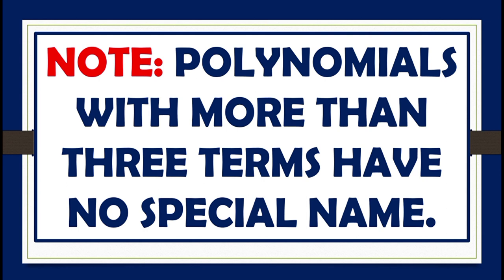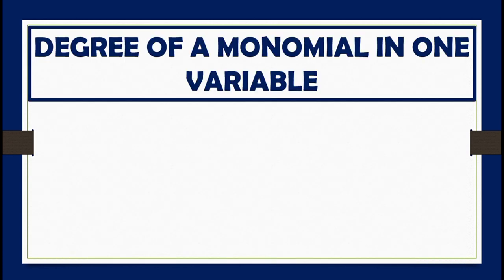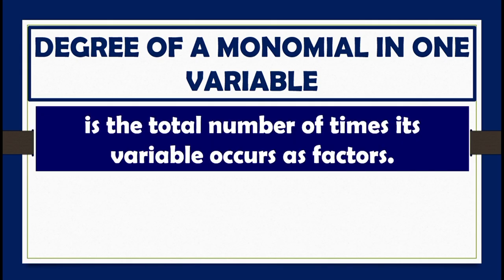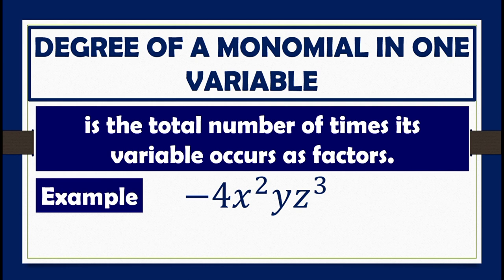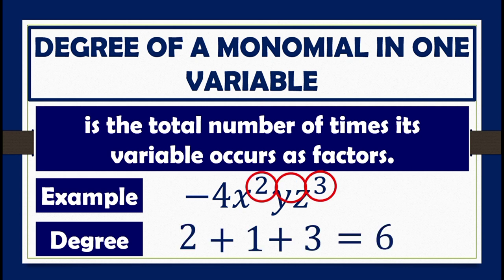Polynomials with more than three terms have no special name. Polynomials can also be classified according to degree. The degree of a monomial in one variable is the total number of times its variable occurs as factors. For example, negative 4x squared yz cubed — to find the degree of this monomial, all we need to do is add the exponents of the variables. Therefore, the degree is 2 plus 1 plus 3, which equals 6.